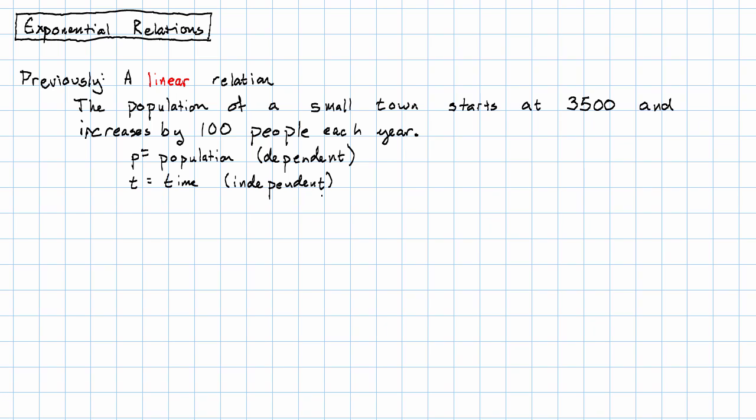Our independent variable is time, the number of years that have passed, and our dependent variable is p, the population of the town.